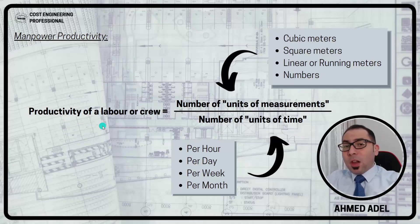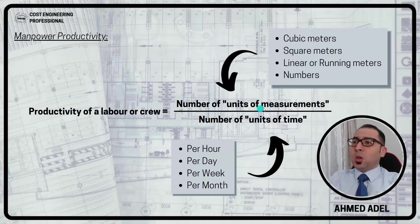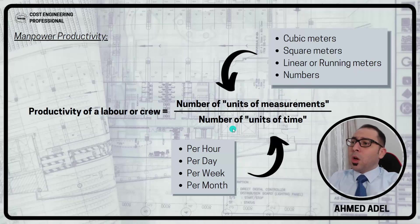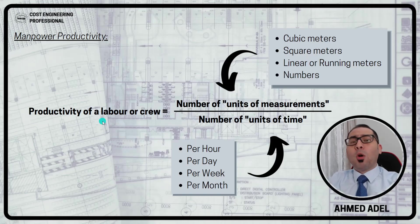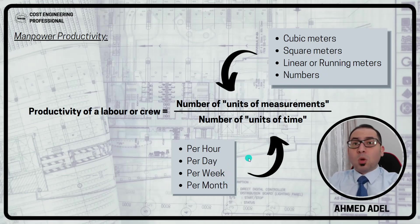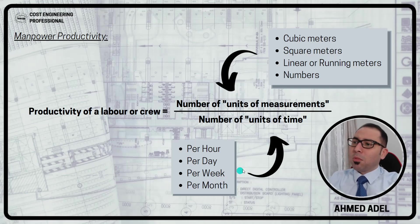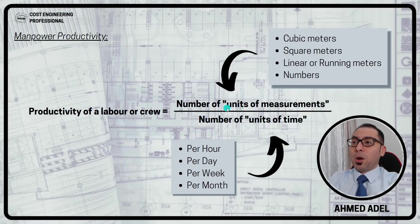The productivity of a labor or work crew equals the number of units of measurement divided by number of units of time. Units of measurement can be cubic meters, square meters, running meters, numbers — whatever the unit. Divided by the unit of time: hour, day, week, month. So I can say the productivity of this crew is, let's say, 80 numbers of blocks per day. For example, my productivity is I can make one video per week — one number per week.